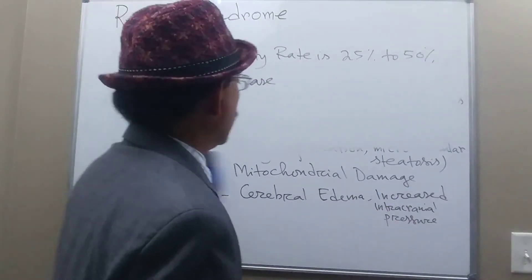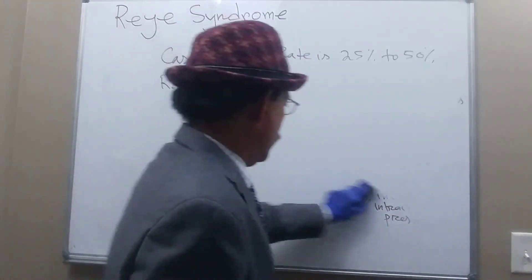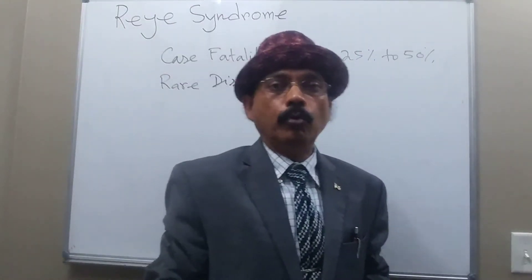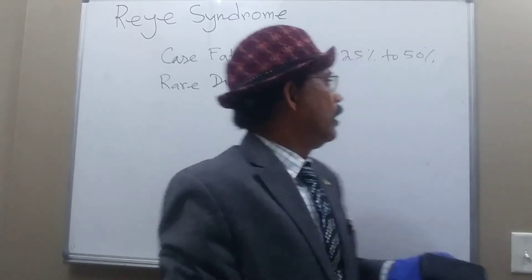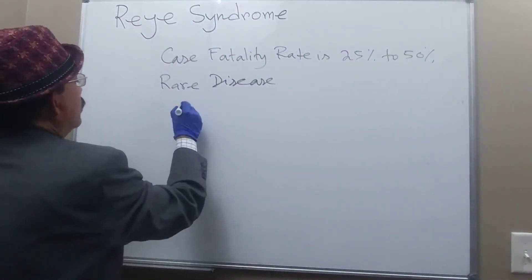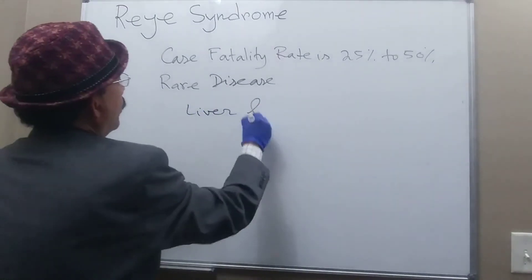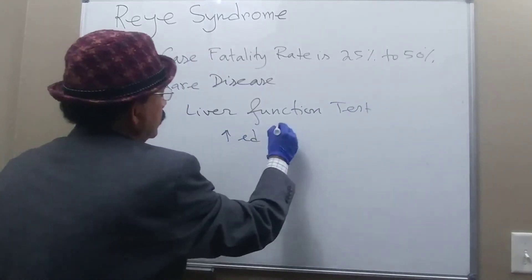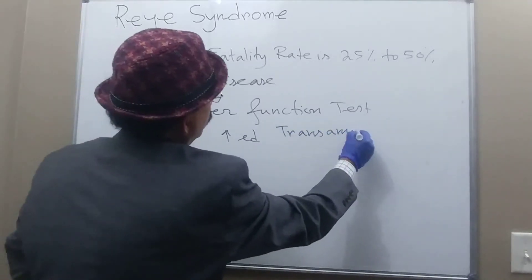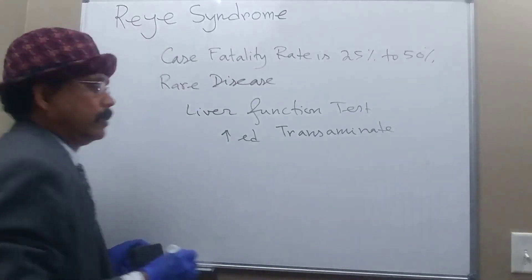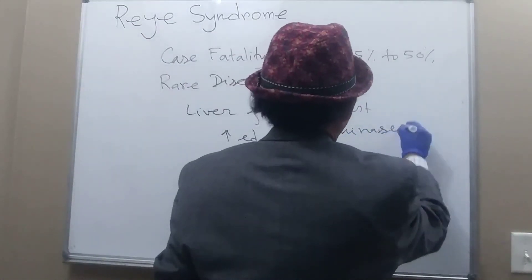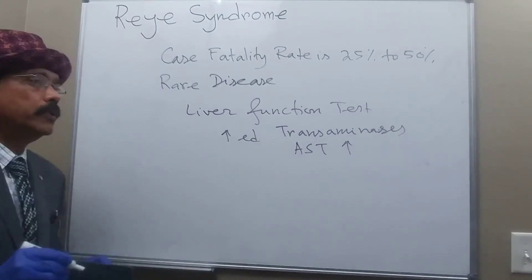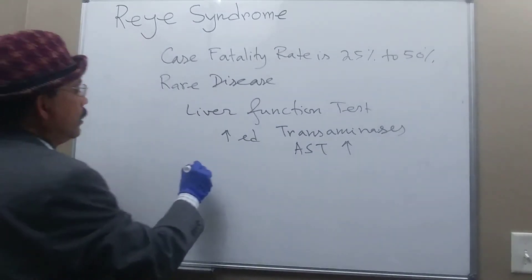How can you diagnose this condition? Diagnosis is based on history from the patient and signs of increasing intracranial pressure. On liver function tests, we will see increased transaminases — AST levels will be high. A liver biopsy is another way to diagnose this condition.